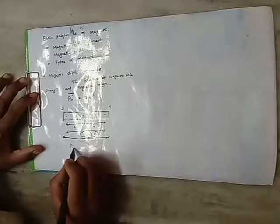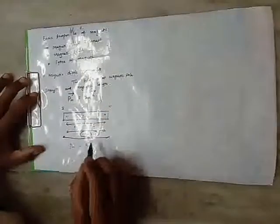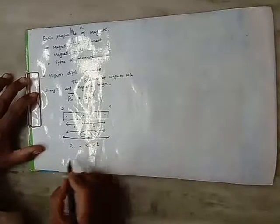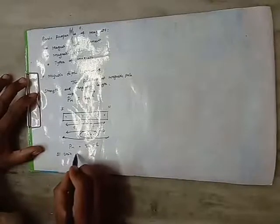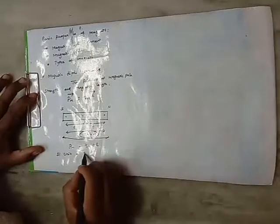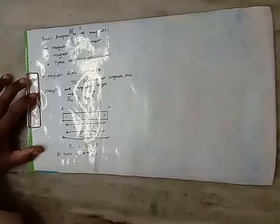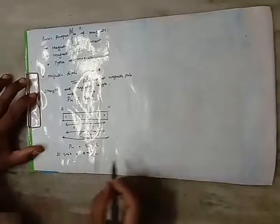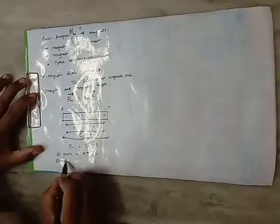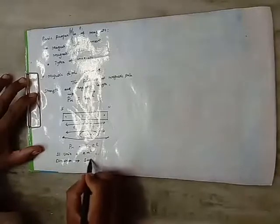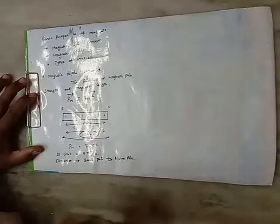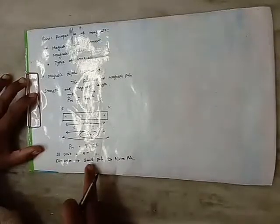Substituting the value of D in this equation, we can write the magnetic dipole moment: PM is equal to QM multiplied by D vector, where D vector equals 2L. So PM is equal to QM times 2L. The SI unit of the magnetic dipole moment is ampere meter square. The direction of the magnetic moment is always from south pole to north pole.